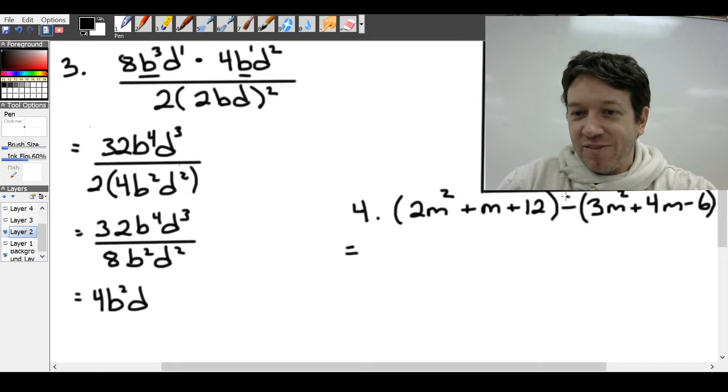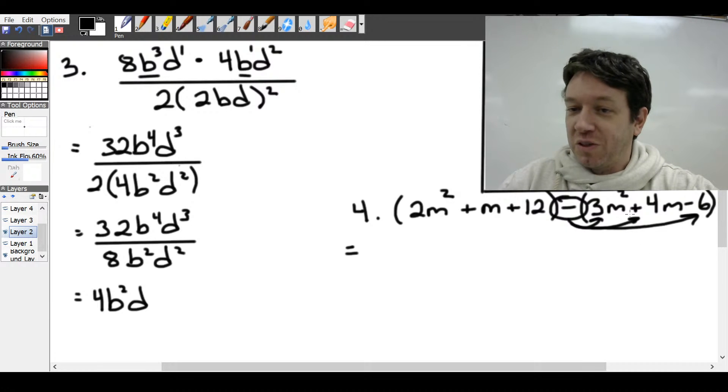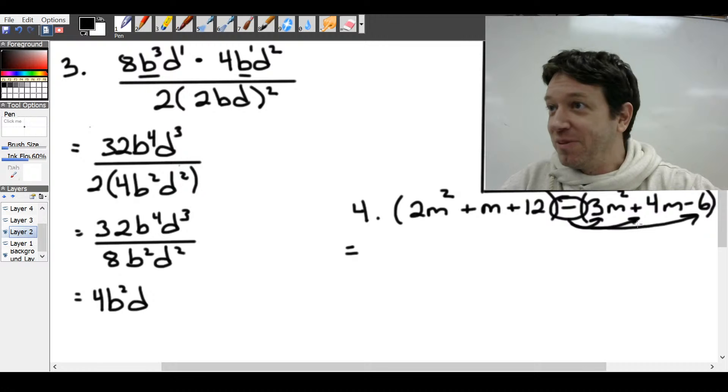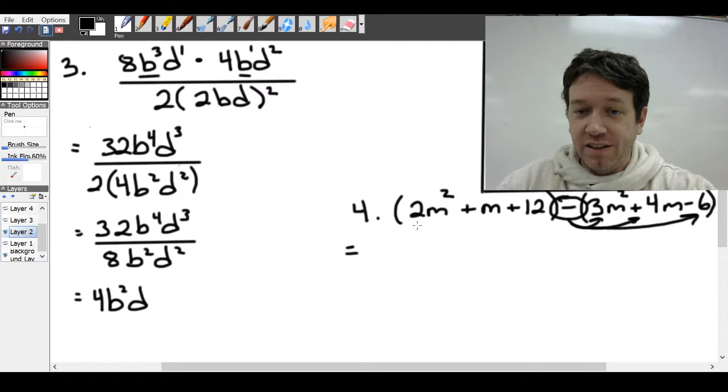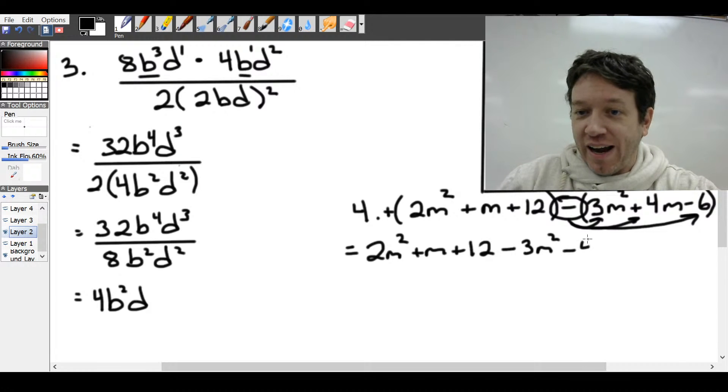This one, we have a negative out in front here. So we need to distribute that negative into every single term inside the bracket. So what that means is every single term is going to have its sign changed. This one is essentially a positive one out in front. So we can just drop the brackets.